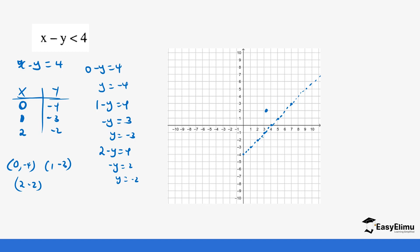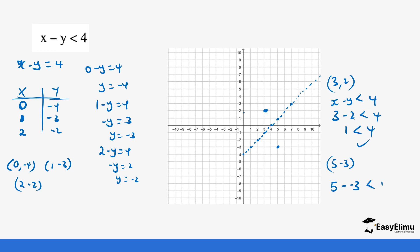Let's start with values above the line. We can pick (3, 2). Inputting into the inequality x minus y is less than 4: 3 minus 2 equals 1, which is less than 4 — true. So values above the line are true. Now let's pick a value below the line, say (5, -3): 5 minus (-3) equals 8, which is not less than 4 — not true. So values below the line are unwanted, and we shade below the line.